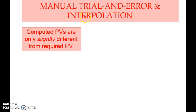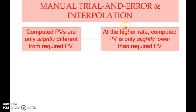Because trial and error is tedious, we use an easier estimation method called interpolation. This gives an approximation — a rough rate that is close enough to the actual value. The first condition to use interpolation is that the computed present values are only slightly different from the required present value. At the higher rate, the computed present value is only slightly lower than required.